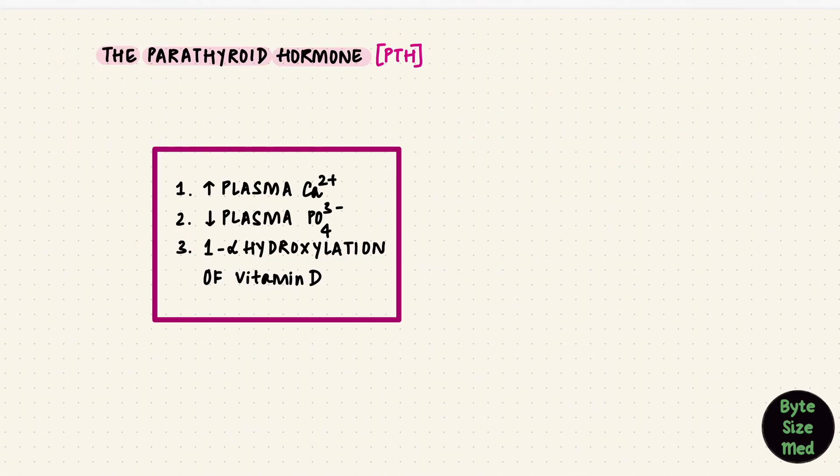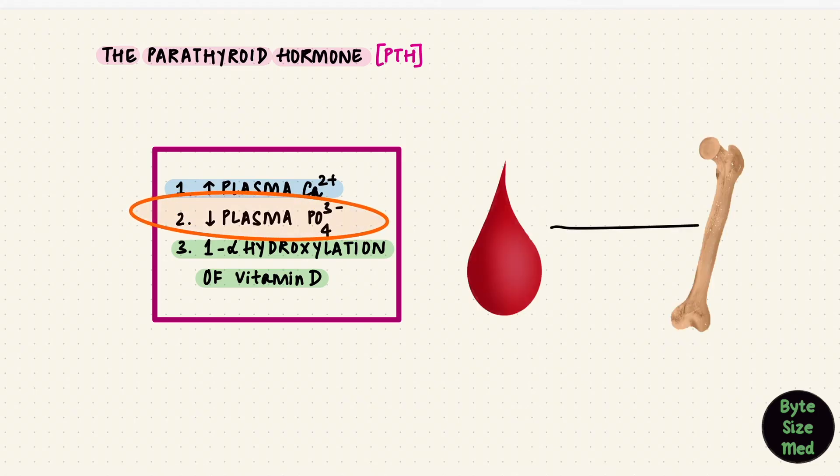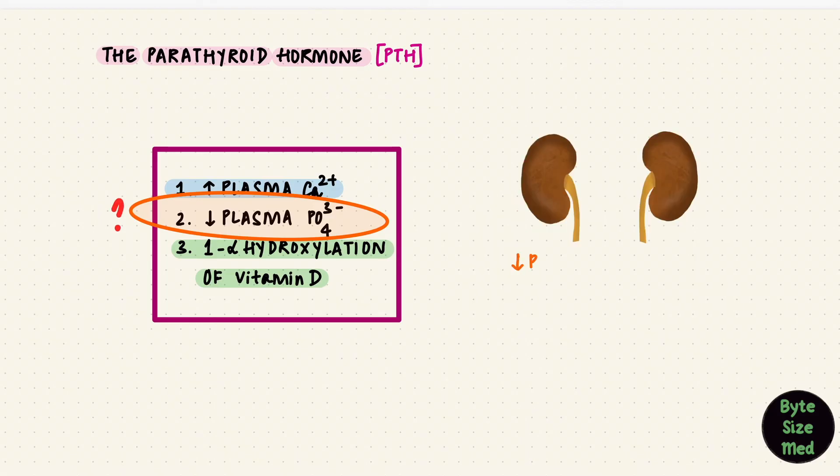So we saw how PTH works with calcium, and we also saw how PTH works with vitamin D. But we've got one sentence left, and that's to do with phosphate. I already showed you how with bone resorption, PTH can put phosphate along with calcium back into the blood. But this statement is the opposite. I'm saying it'll lower plasma phosphate. That's because it reduces phosphate reabsorption and increases its excretion by the kidney.